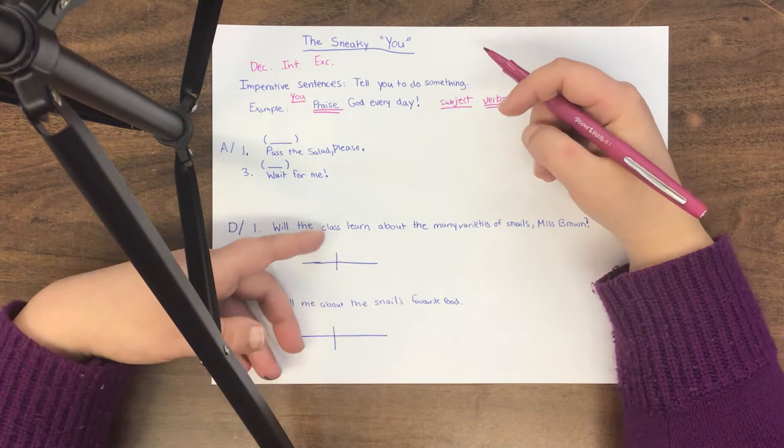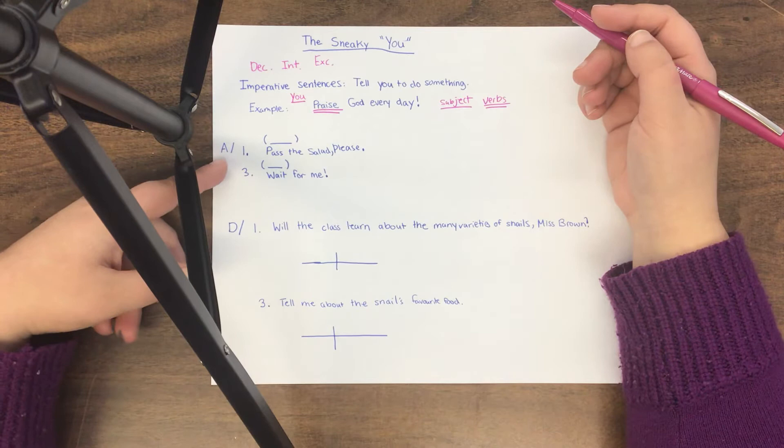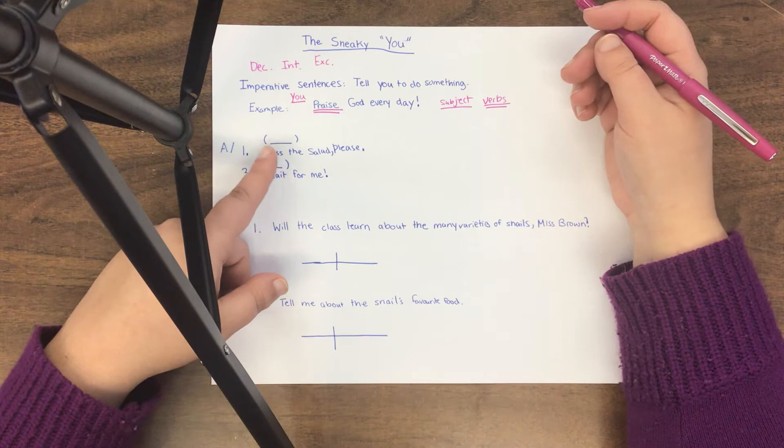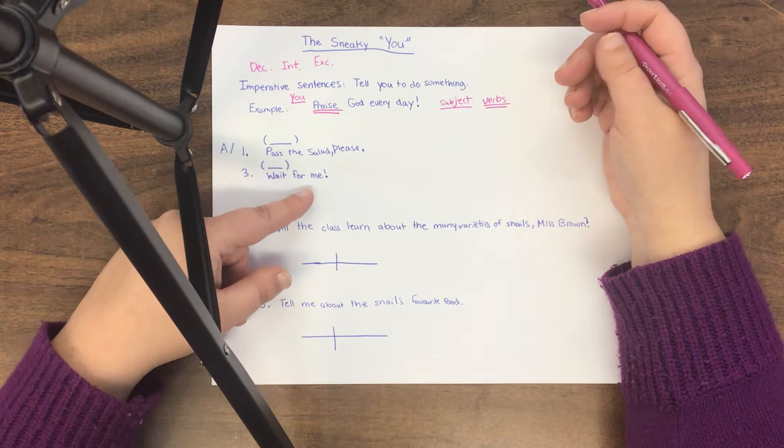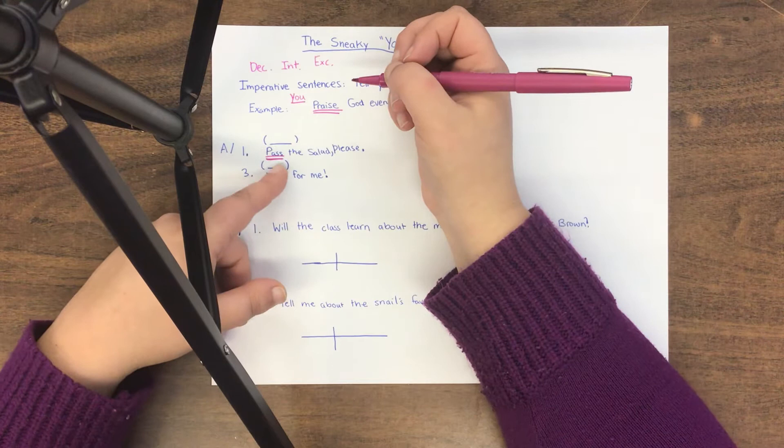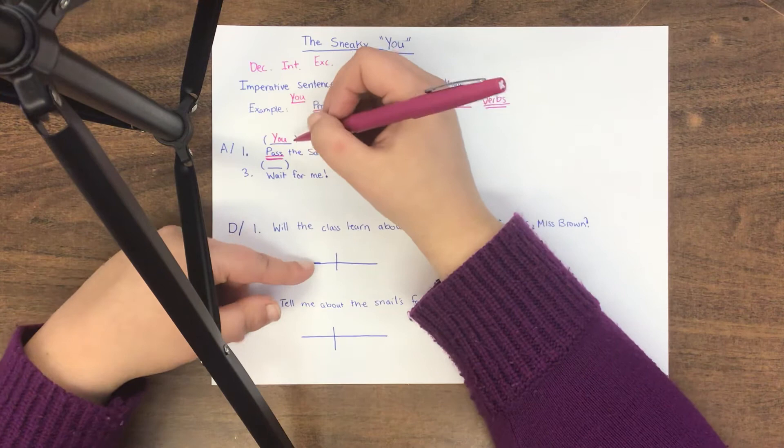So let's take that principle and apply it to some of our work. In the first part of our work, we're given an imperative sentence and we are told to double underline the verbs and underline the subject once. So in this sentence, pass the salad, please. The verb is pass. What's the subject? Who's passing? You are because you're being asked to. So in the little brackets, we know that the sneaky subject is actually you.